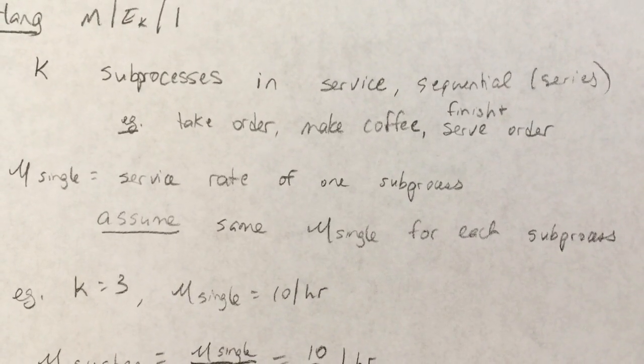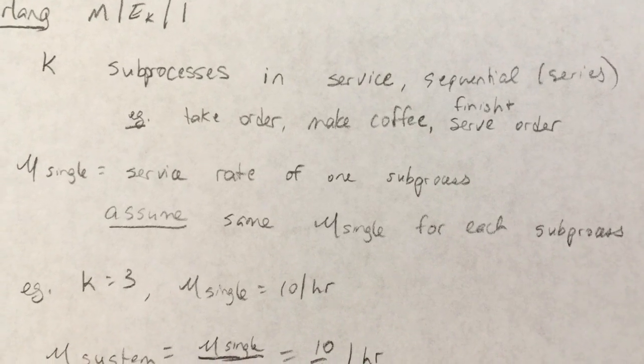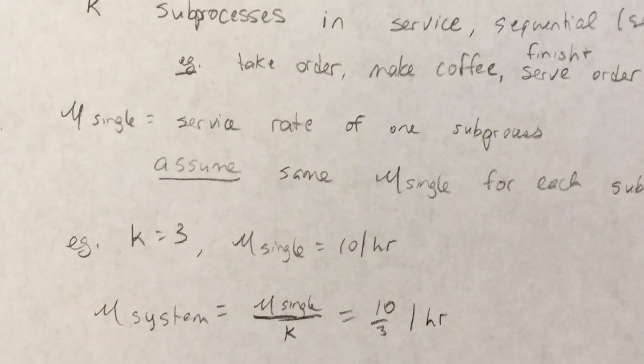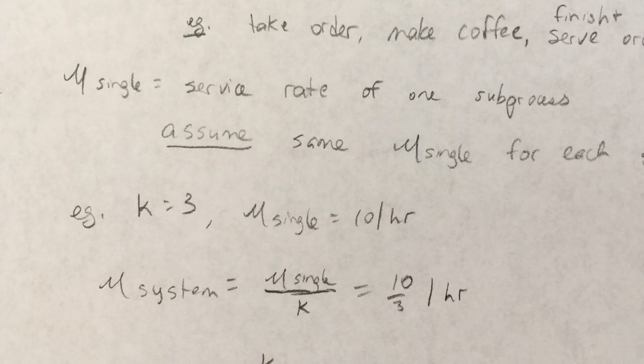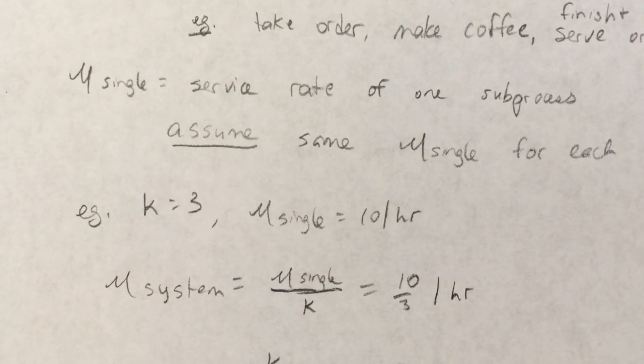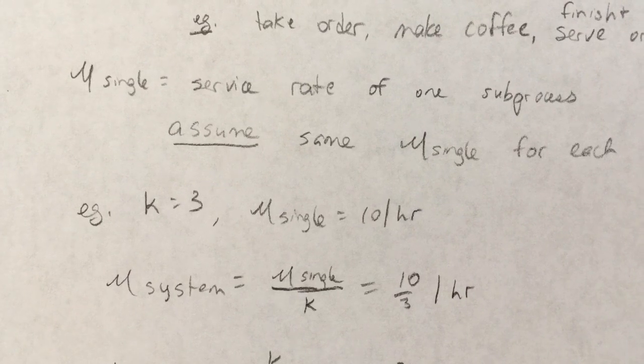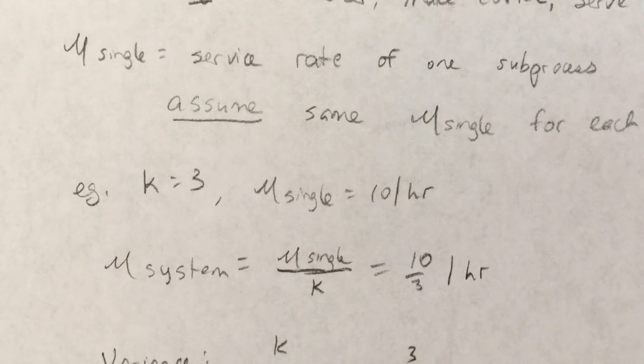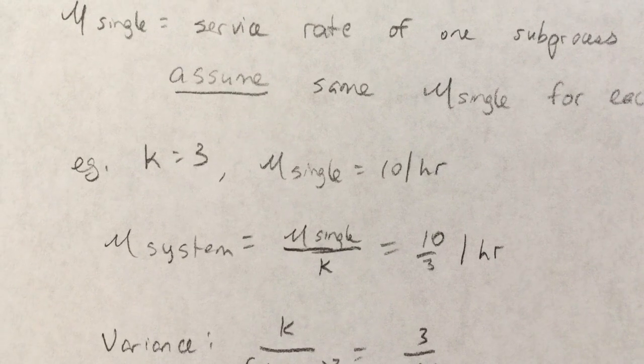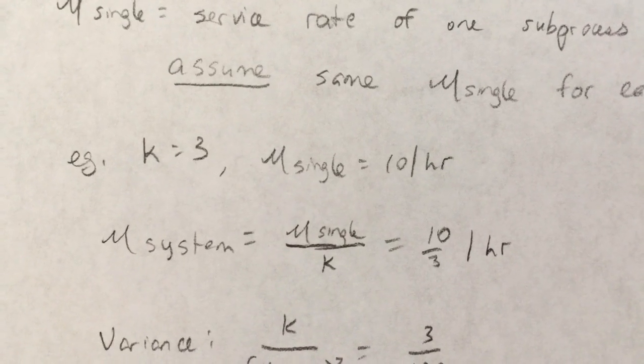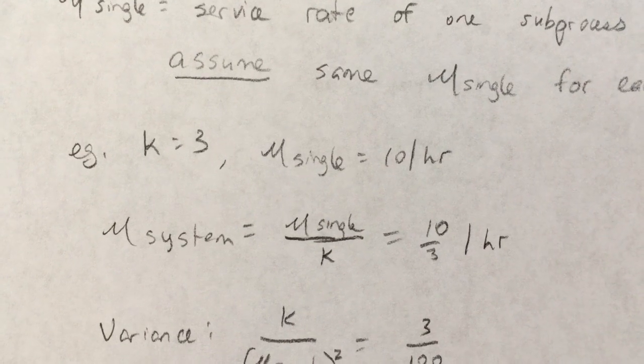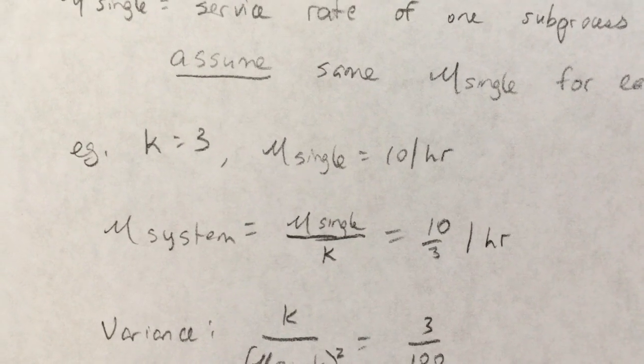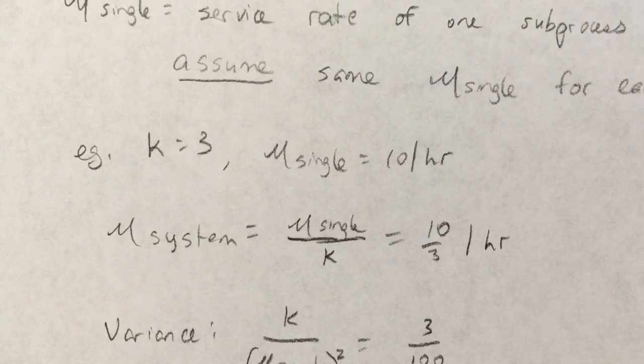So for example in a coffee shop example where let's say you have three subprocesses and each of the subprocesses has a rate of 10 per hour, now your rate for the whole system is just going to be the rate for one of the subprocesses divided by K. So in this case you're going to process 10 thirds per hour, so it's three times as slow as the rate for just a single subprocess.